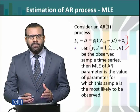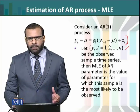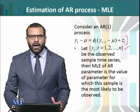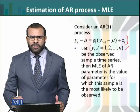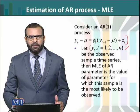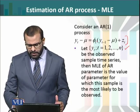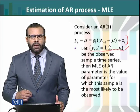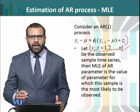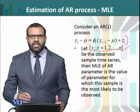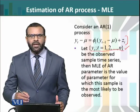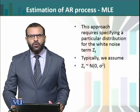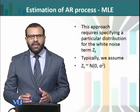Hum yeh karna chahte hain ke, for example, autoregressive process ka parameter — agar hamare paas yeh sample data maujud hai, to kaun kaun si values hongi hamare in parameters ki — mu aur phi one ki — jis ke liye is sample ke generate hone ki probability sabse zyada hai. Iska likelihood sabse zyada hai. Yeh jo concept hai, yeh probability ke sath link karta hai.